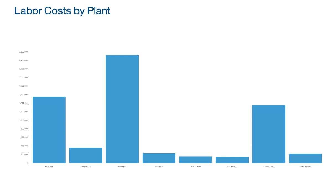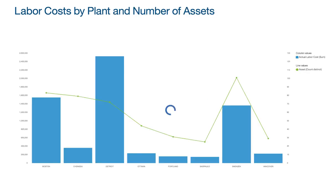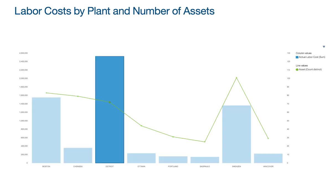If we look at our eight different plants, we see this large column and it's coming from our facility in Detroit. Detroit has the greatest labor cost. Does that make sense? Do they have the most number of assets? Actually, Detroit does not — if we look closely at the chart, we can see that Detroit has a smaller number of assets compared to other plants.